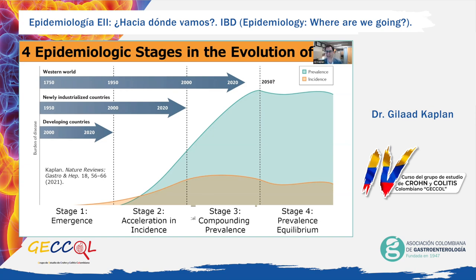The first stage is disease emergence, where after thousands of years of very low numbers of cases or possibly non-existing disease, IBD emerges in society. The next stage is an acceleration in the incidence of IBD with relatively low prevalence. Incidence is the number of new diagnoses made of IBD annually, whereas prevalence is the accumulated number of people living with IBD in a region. The third stage is called compounding prevalence, where the number of newly diagnosed patients begins to plateau into a coalescing incidence range, but prevalence steadily climbs, putting great strain on the healthcare system.